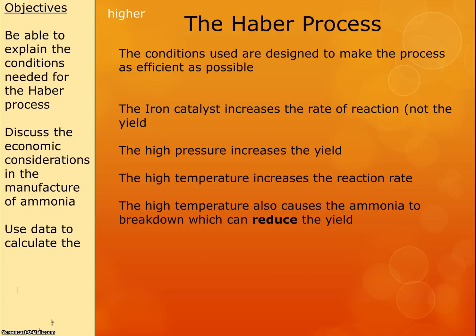For the foundation paper you need to know the conditions; for the higher paper you need to explain why we use them. The iron catalyst increases the rate of reaction. High pressure increases the yield. High temperature also increases the rate of reaction, but on the negative side, high temperature can cause ammonia to break down and drive the reaction backwards, reducing the yield. So choosing the temperature is a balance between those two effects. And because it's an industrial process, cost is a major factor in decision-making.